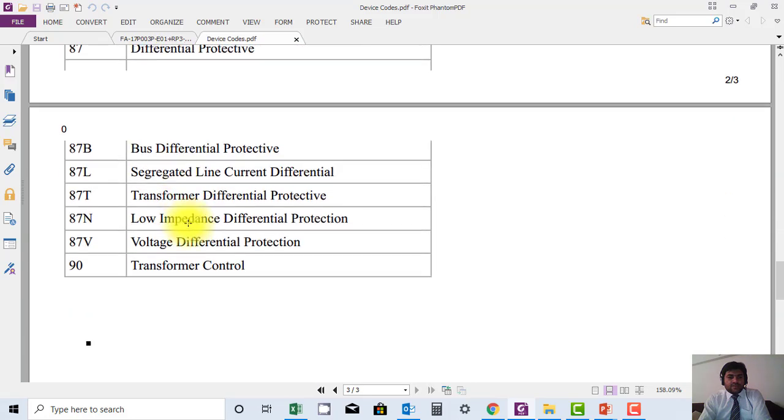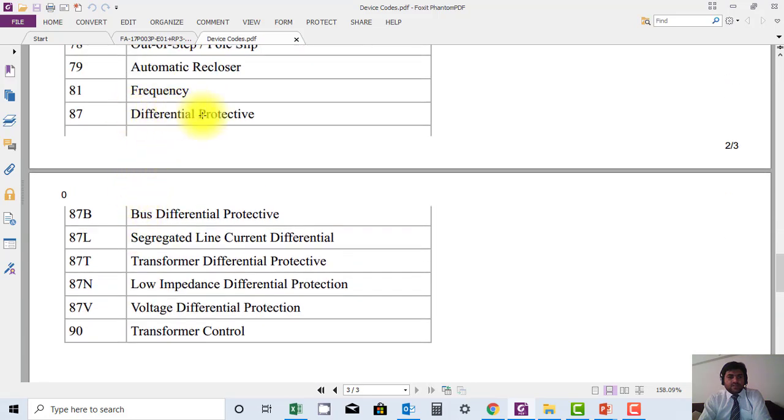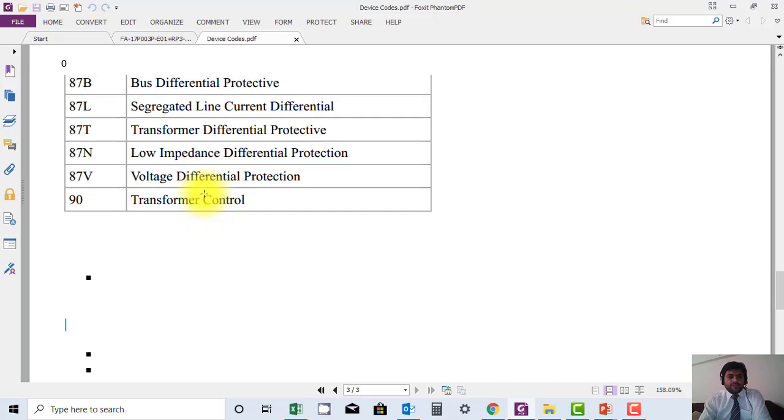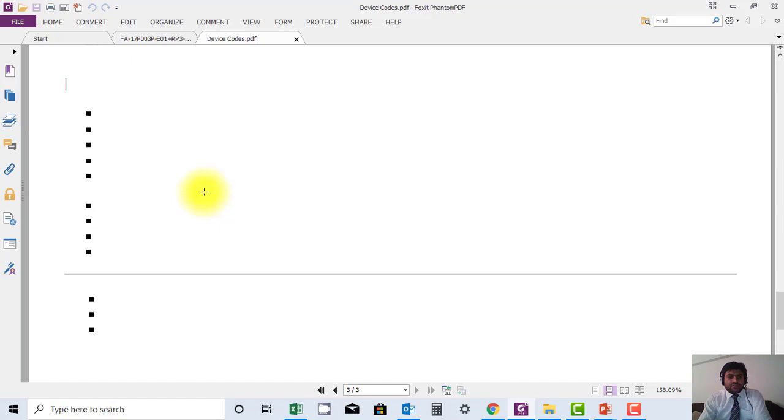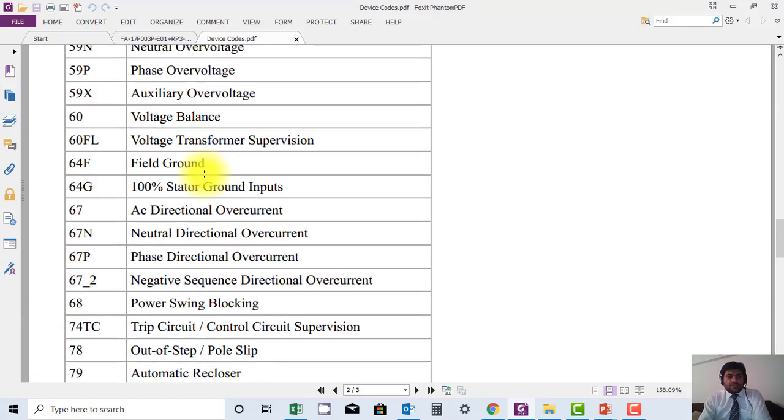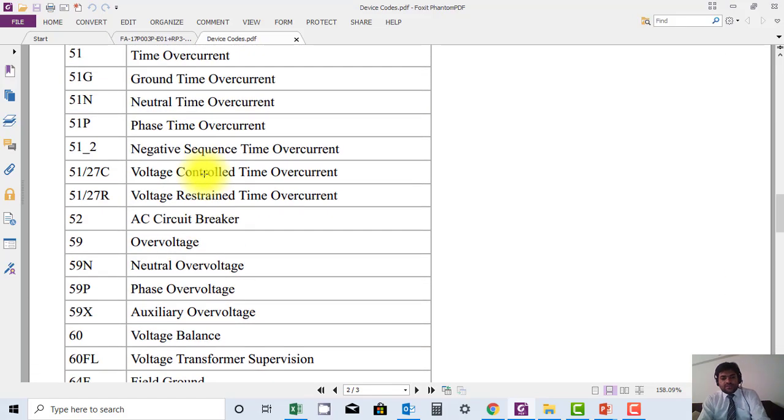Then we have 87, which is very famous again. This is differential protection. Code 87 is for different types of bus, power transformer, or generator protection. So this course you can download and you can study. This will be really useful for the preparation of exams.